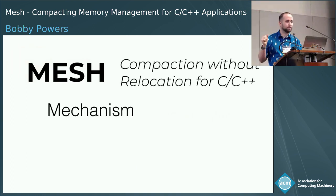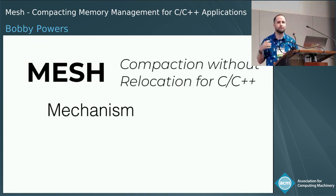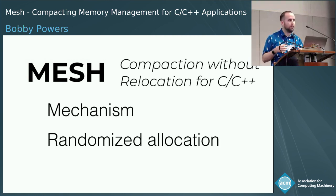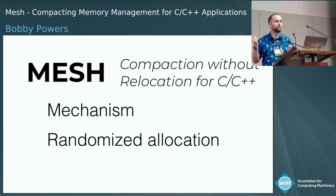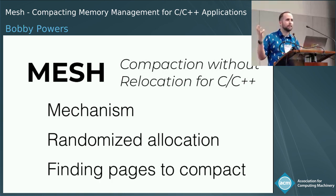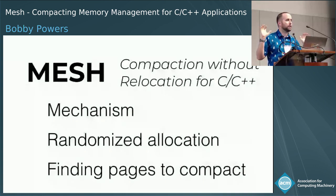In the rest of the talk, I want to go over three things: the mechanism we use to compact the heap, our use of randomization in our allocator, and finally how we actually find sets of pages to compact.